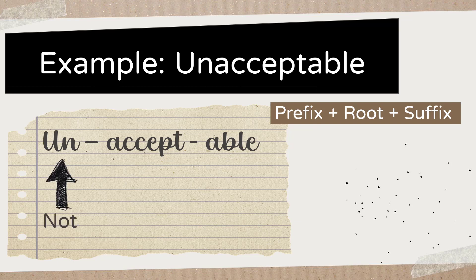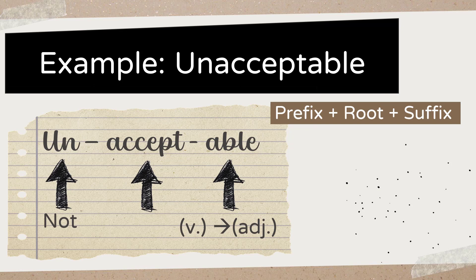The 'un' is the prefix, and 'un' usually has the meaning of 'not' or 'no' — a negative meaning. We all know what 'accept' means, so I won't go into that. Even without the suffix 'able,' we're still talking about 'not accept.' Once we add the suffix 'able,' it turns the word into an adjective. Since 'accept' is a verb, we are changing it into an adjective. So when we put all of them together, we get 'not,' 'accept,' and an adjective — meaning an adjective that talks about not accepting the action.